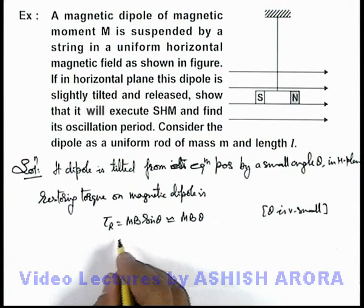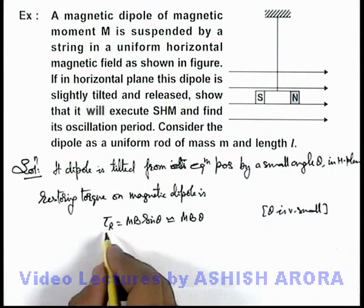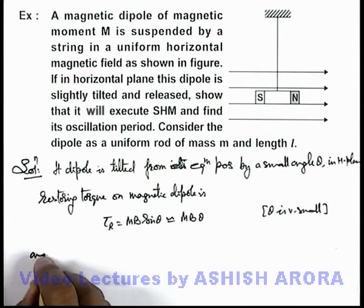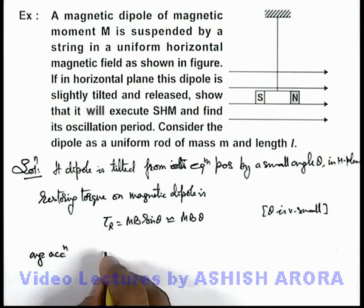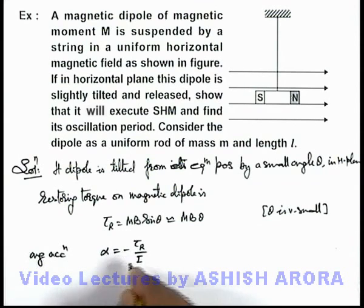The restoring torque will provide a restoring angular acceleration which can be written as I α. So angular acceleration α = -τ/I, where the negative sign denotes that it is opposite to the angular displacement theta.